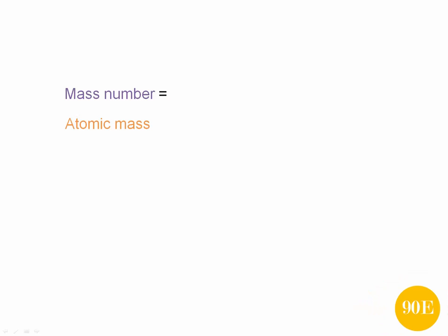You'll probably remember from our previous videos that mass number is the number of subatomic particles within an atom's nucleus. That is, it's the number of protons plus the number of neutrons.